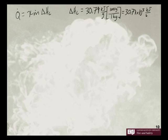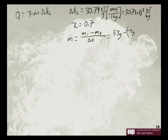If we say our efficiency χ is equal to 0.7, then we need to know our mass loss rate. This is equal to our mass initial minus our mass final divided by our change in time. So that's equal to 53 grams minus negative 4 grams divided by 1 minute and 50 seconds. This is equal to 57 grams divided by 60 seconds plus 50 seconds, which equals 110 seconds.